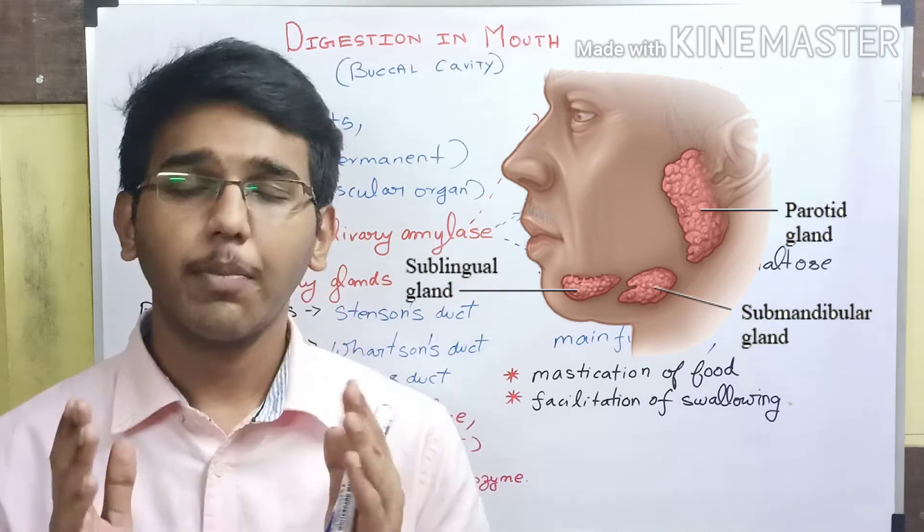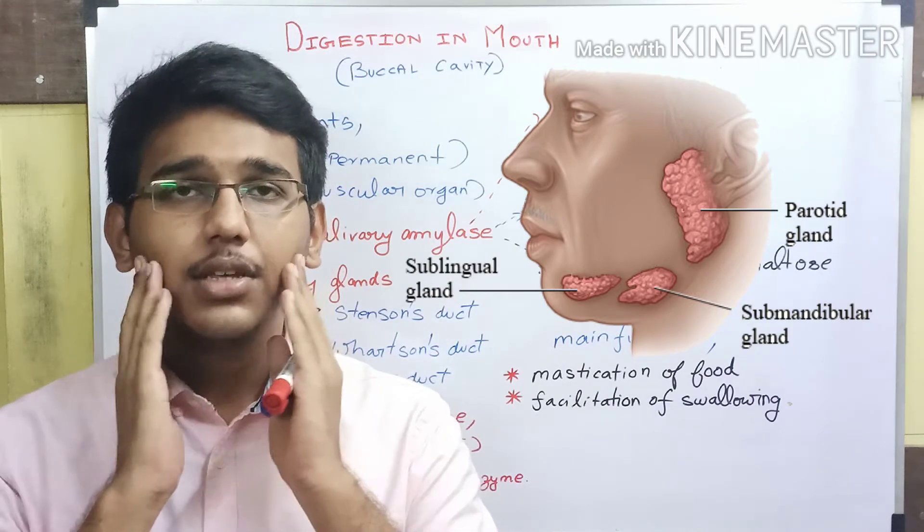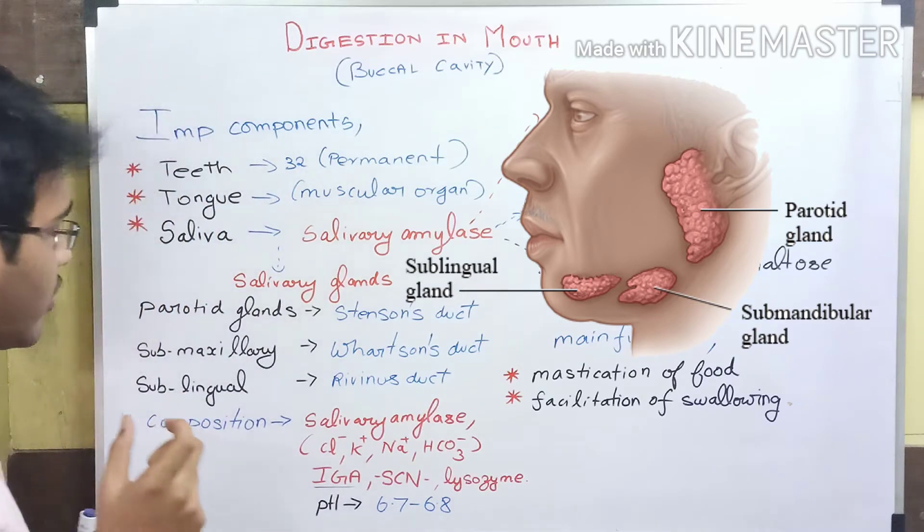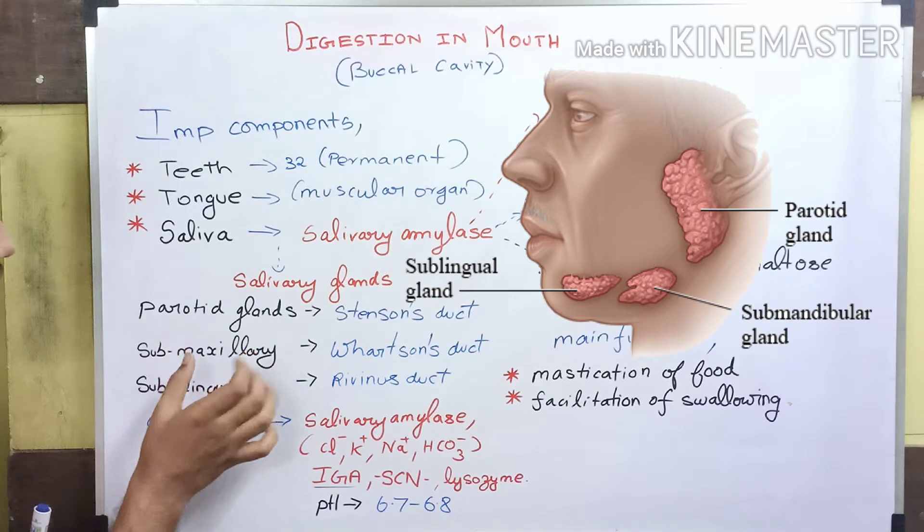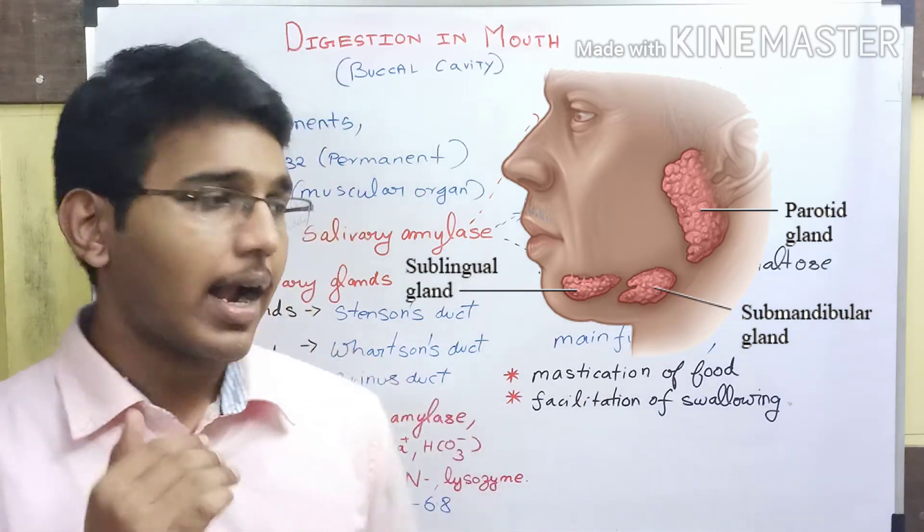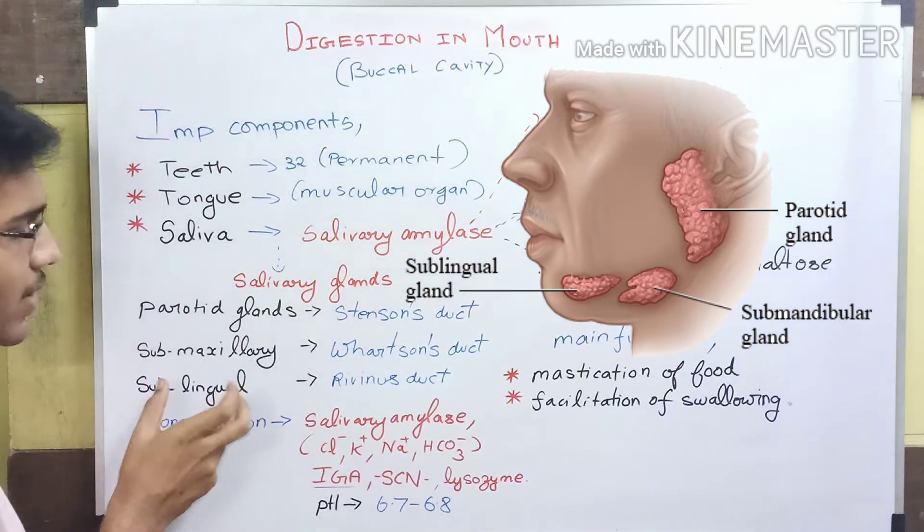Parotid salivary glands are present near the cheeks and are the largest salivary glands. The submaxillary salivary gland is present below the jaws, and the sublingual salivary gland is present beneath the tongue.